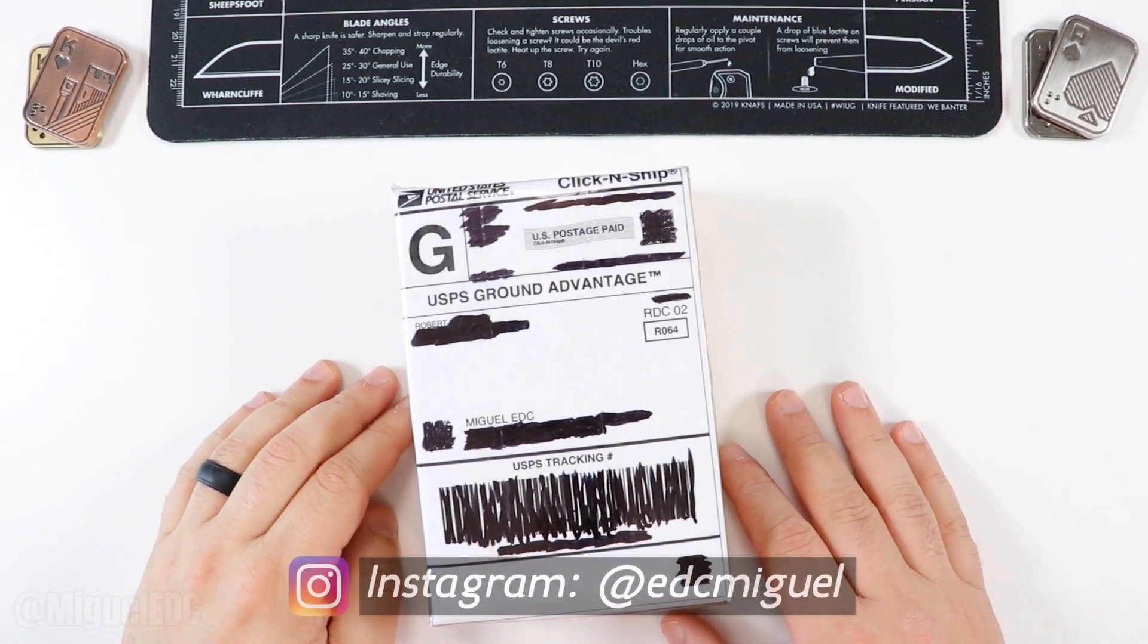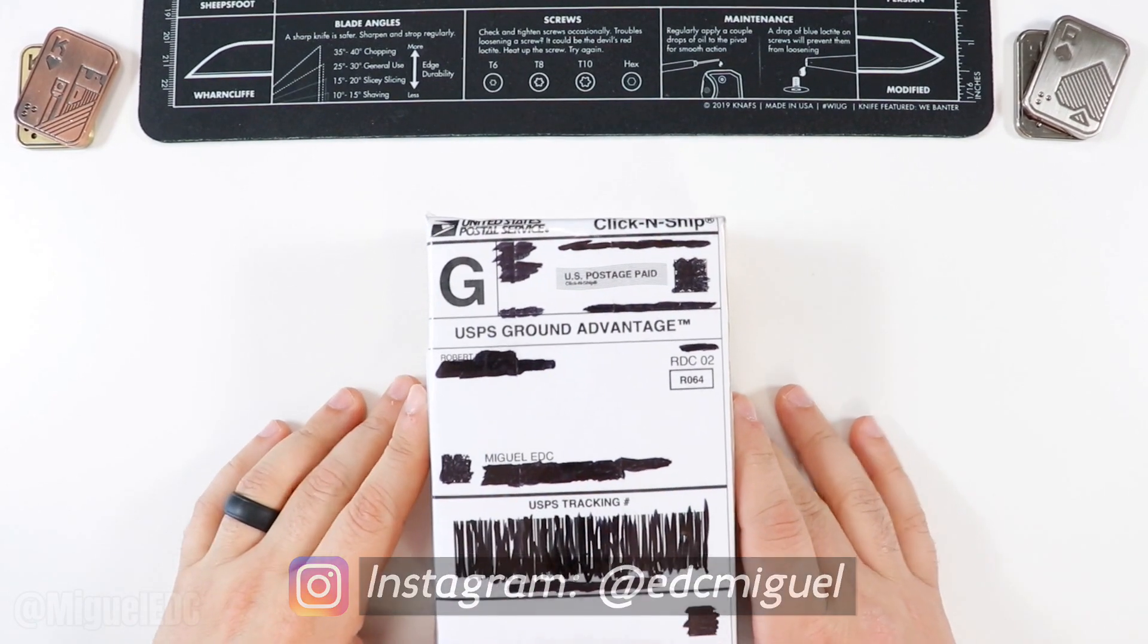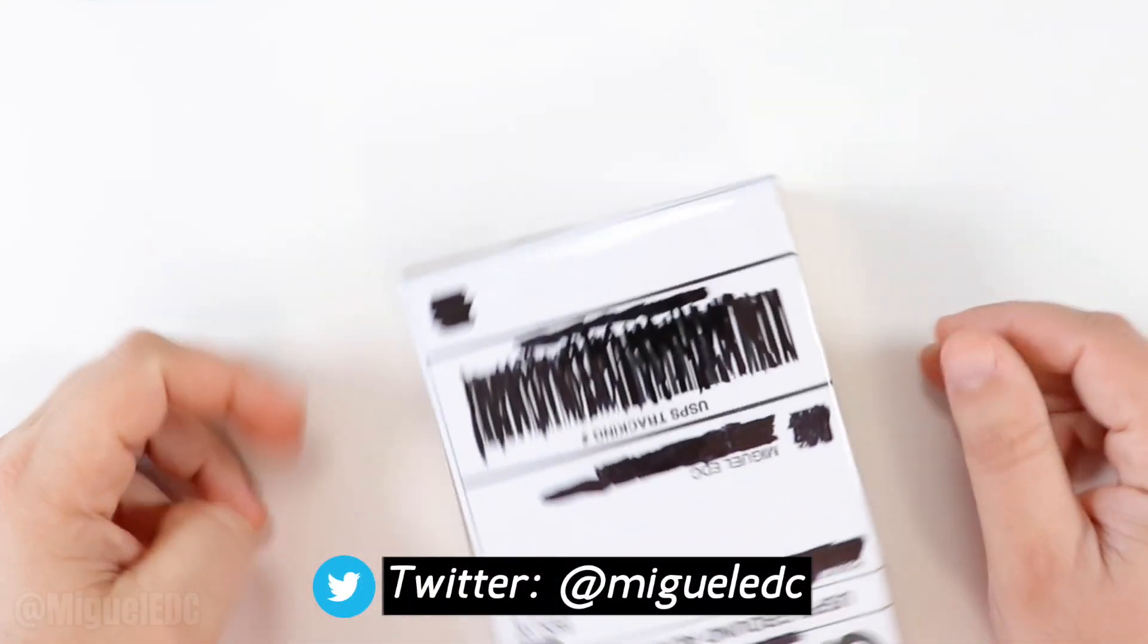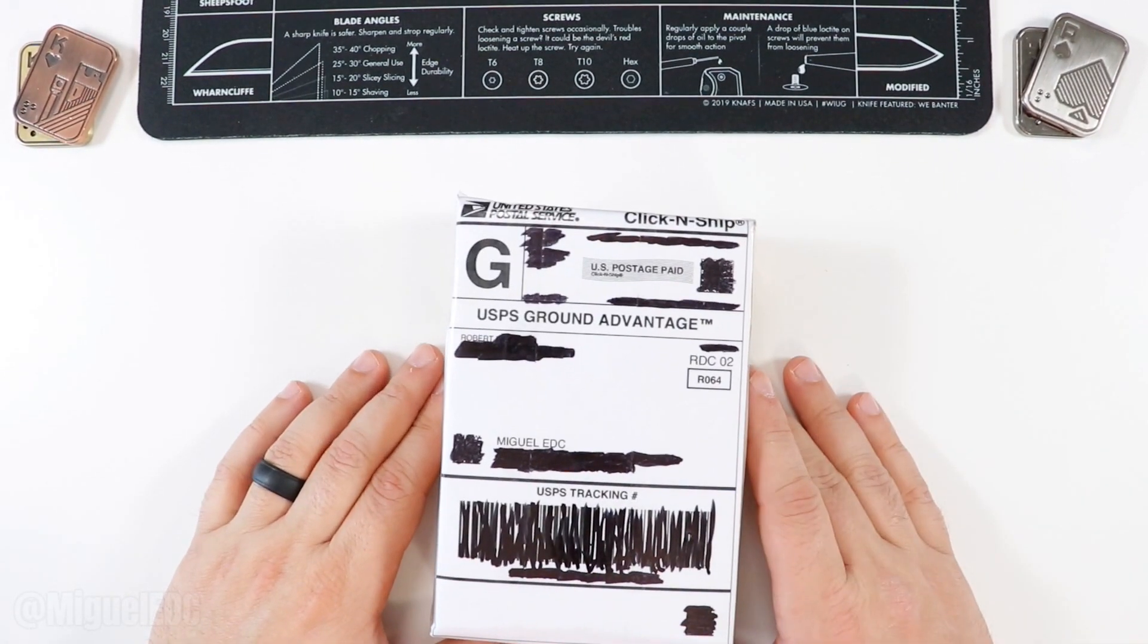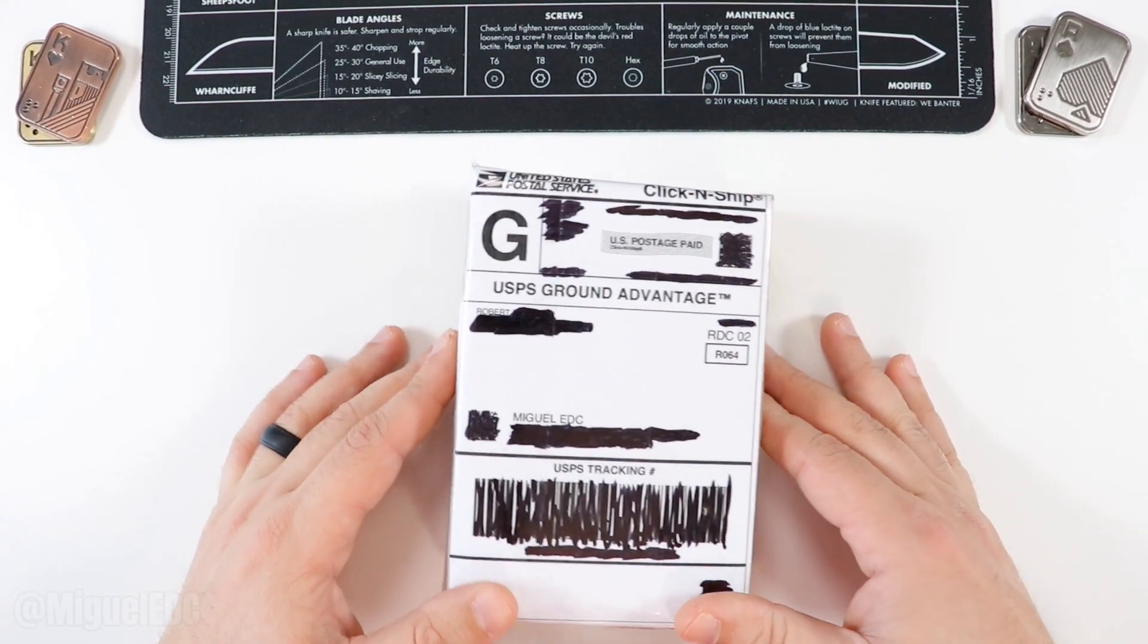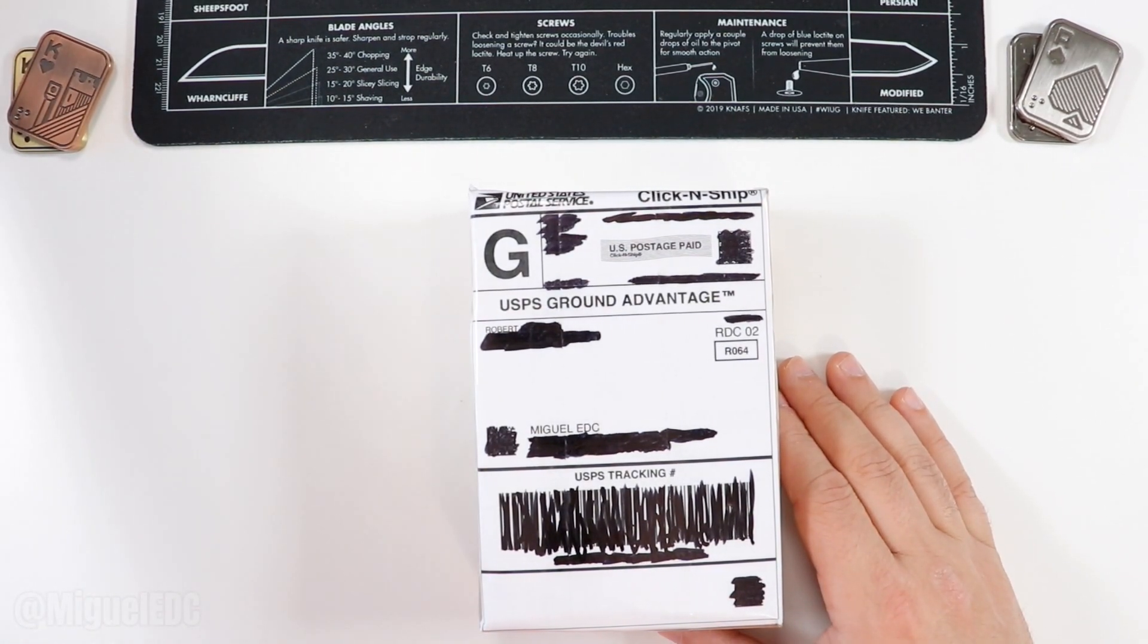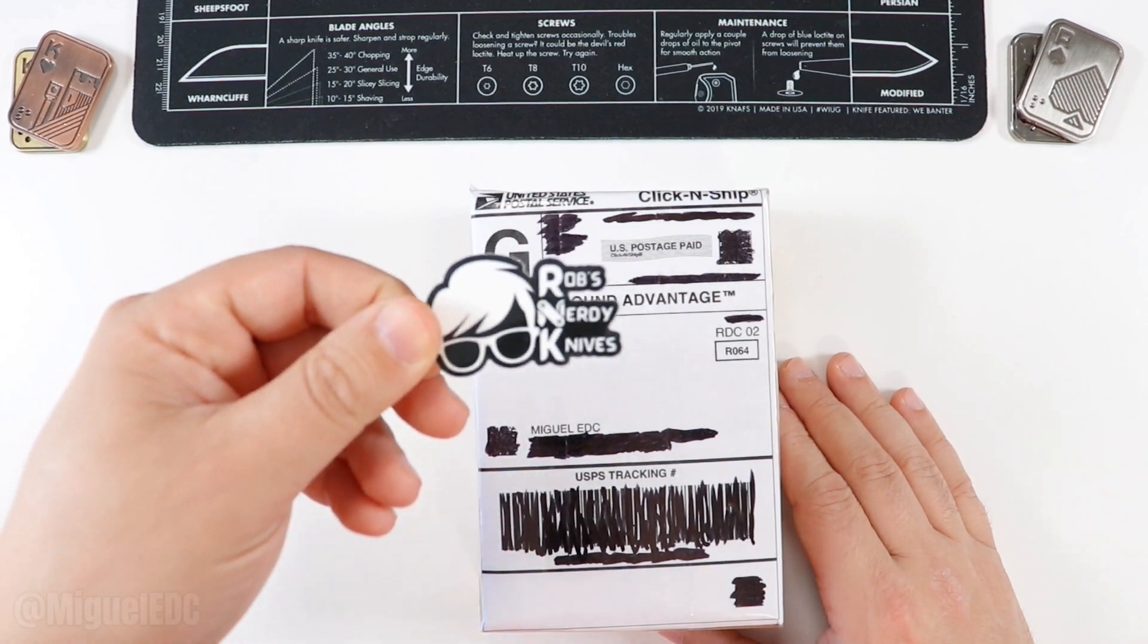What is going on guys? Welcome back to the channel. My name is Miguel. You're watching Miguel EDC, the channel where we talk everything EDC gear here. Today we're taking a look at another knife unboxing. This one is a pretty tiny box here, so what could it possibly be? I'm really not all that sure what's in here. I do know it's coming from Rob's Nerdy Knives, so check out Rob's channel if you're not already subscribed to him.